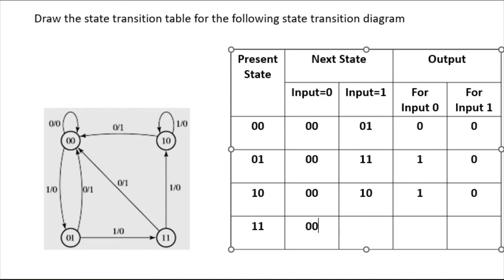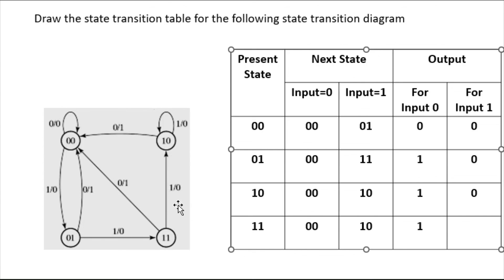For state 11: when input is 0, the output is 1. State 11 goes to state 10 for input 1, so we put 10, and the output is 0.